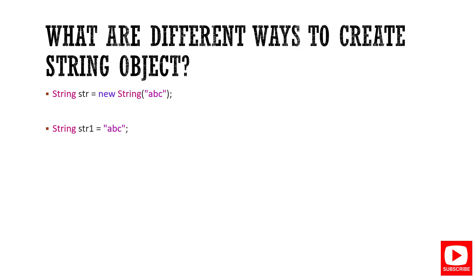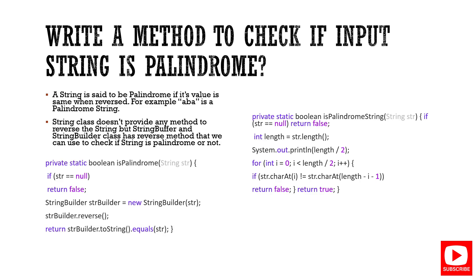The next question is: what are the different ways to create a String object? There are two approaches. One is using the new keyword — for example, new String("abc") — which creates an object stored in heap memory. The second is a string literal like String str = "abc", which is stored directly in the string pool. Both are stored in different places.